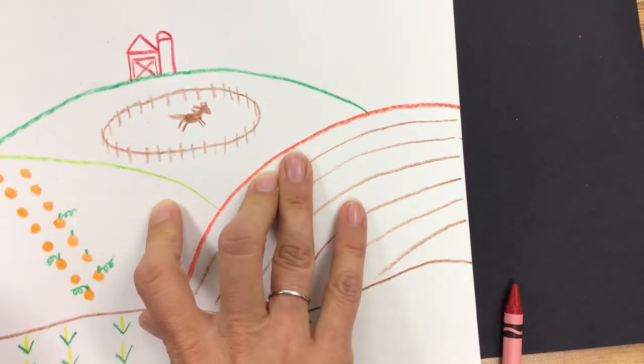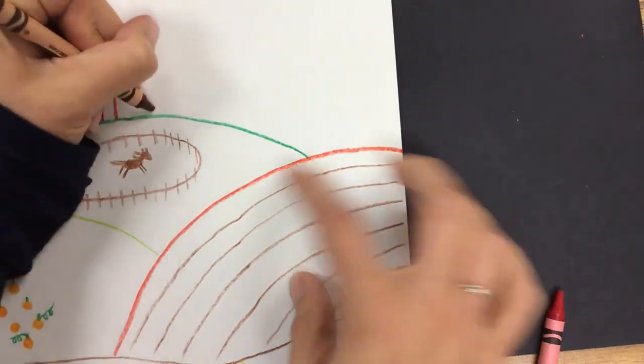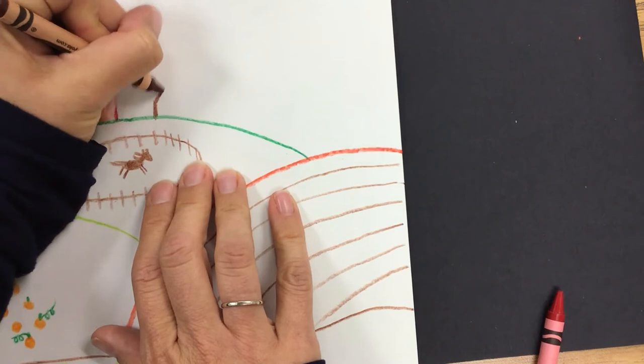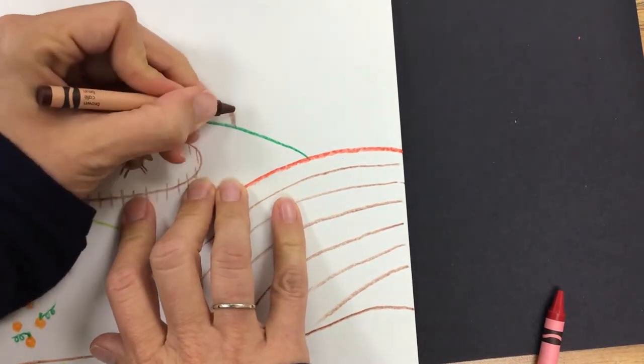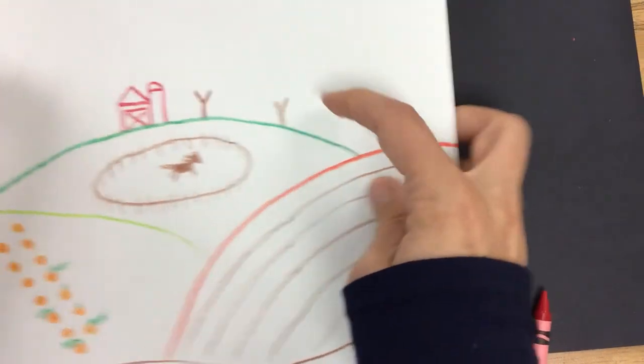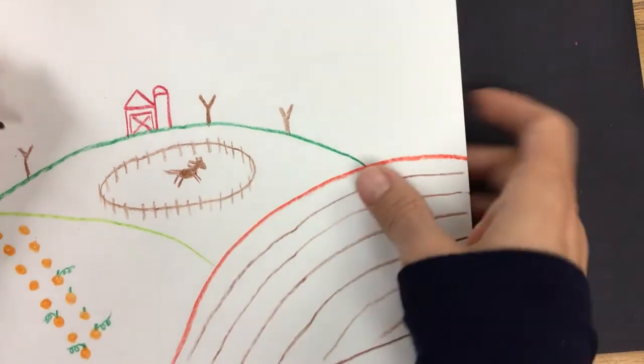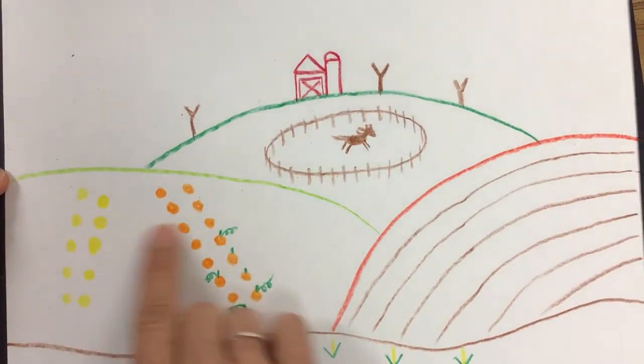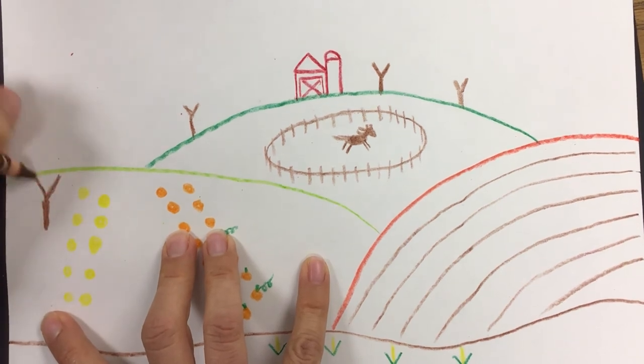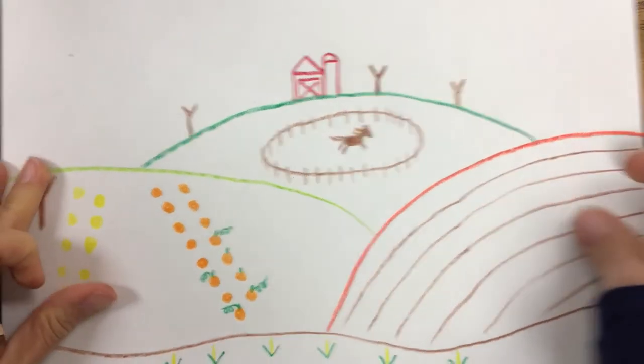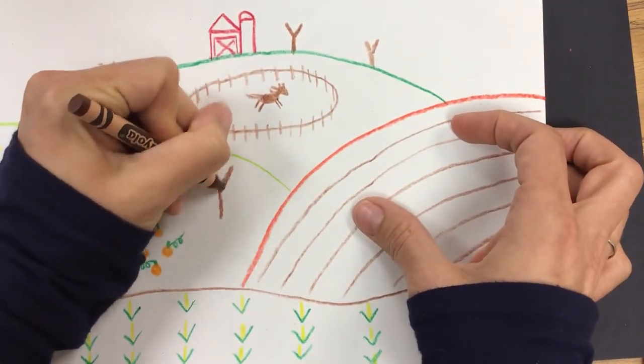Okay and then another great thing to add, trees. Here's an easy way to make trees. If you know how to write the letter Y, well you can make a tree trunk and tree branches. Do some in the distance, this furthest away hill, that are little. And then maybe if you do some trees up here in the middle ground they might be a little bigger. Why? Because this area of the picture is closer to us. So maybe I'll do a few over here too.